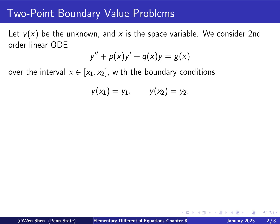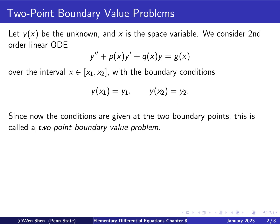We are given boundary conditions — this is the new feature. One condition is given at the left endpoint x1, and the other at x2. So y at x1 shall be y1, and y at x2 shall be y2. Because conditions are given at two boundary points, these are called two-point boundary value problems.